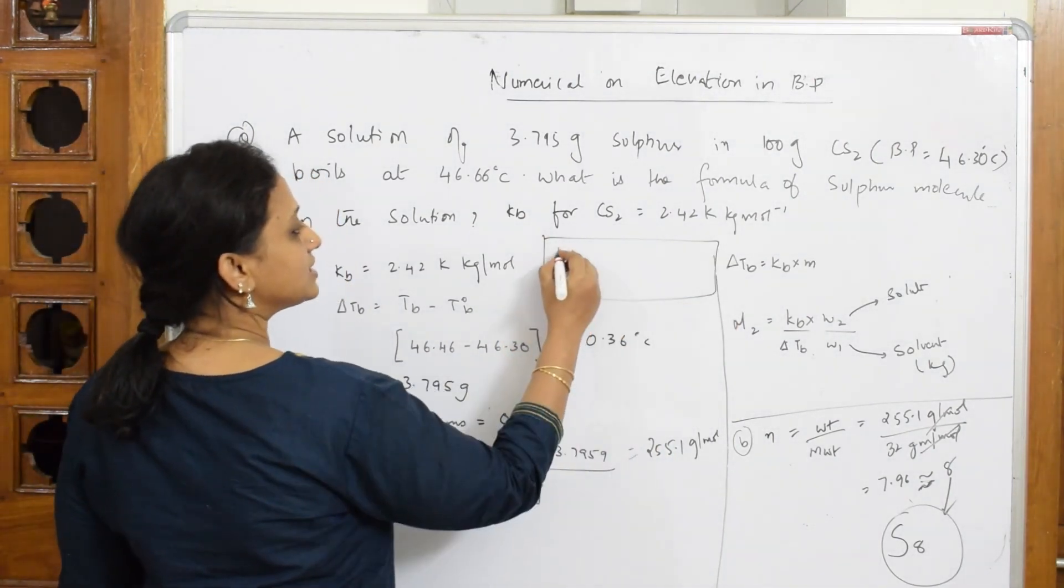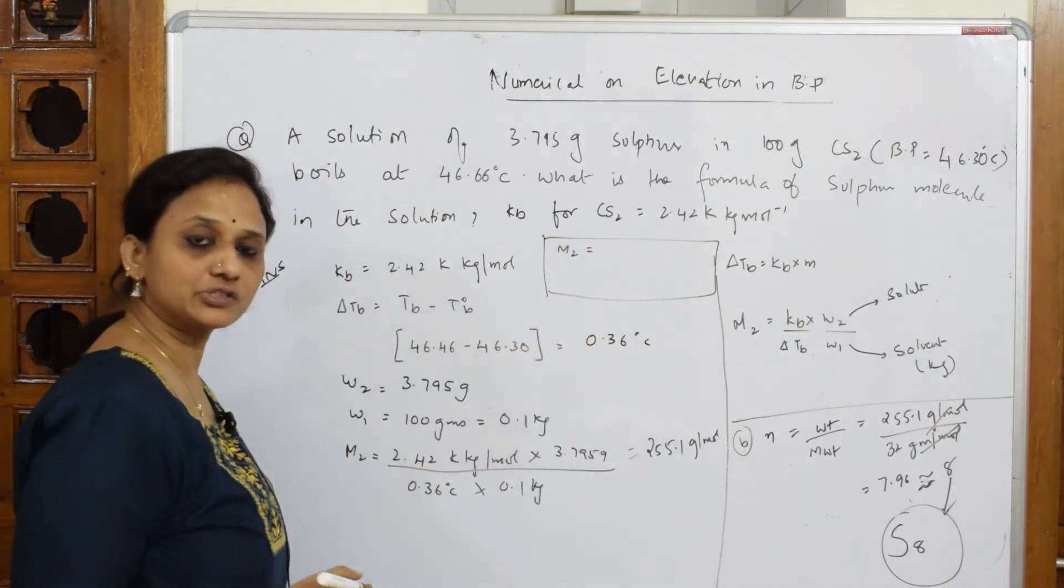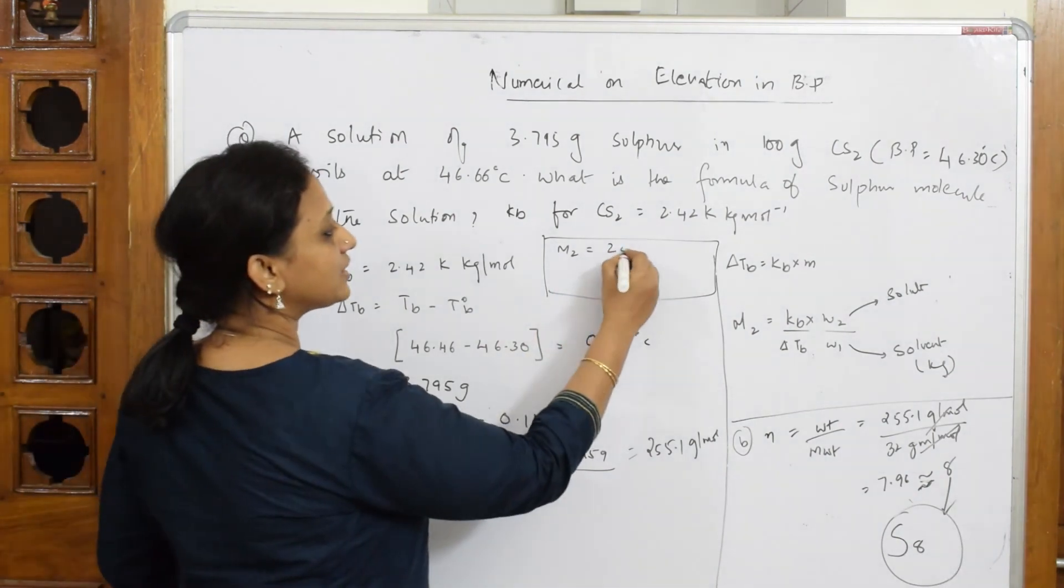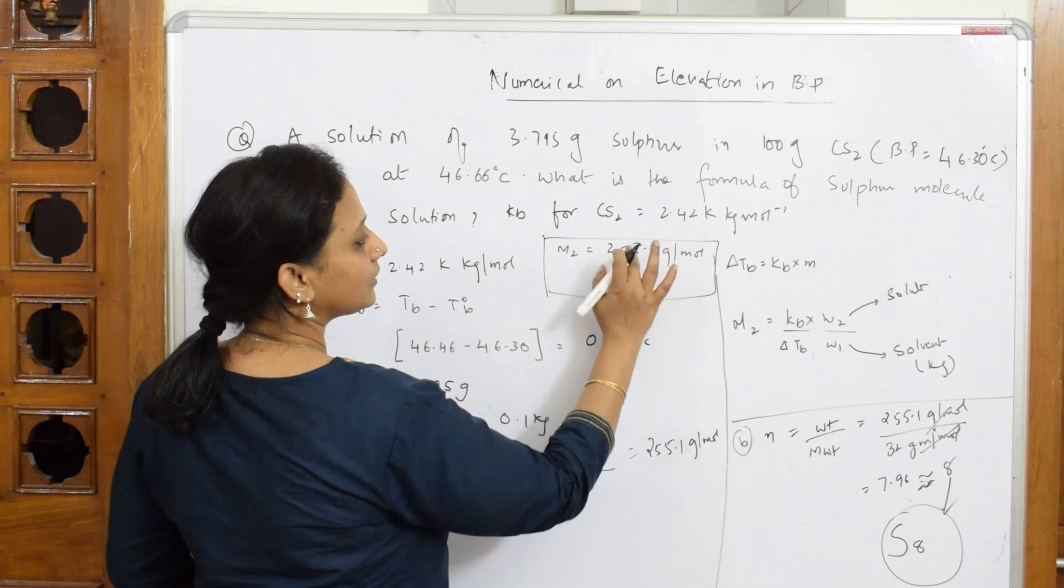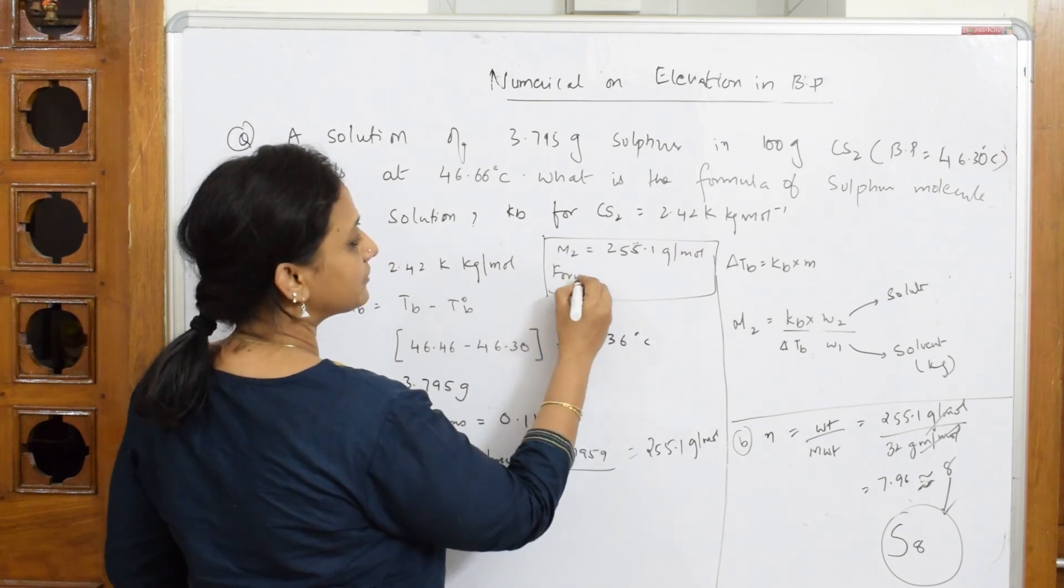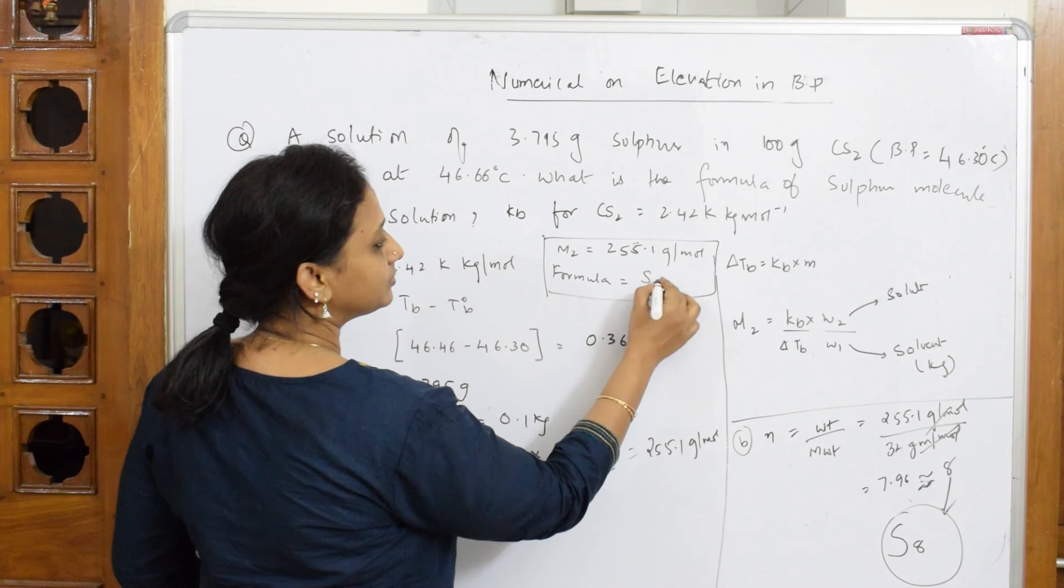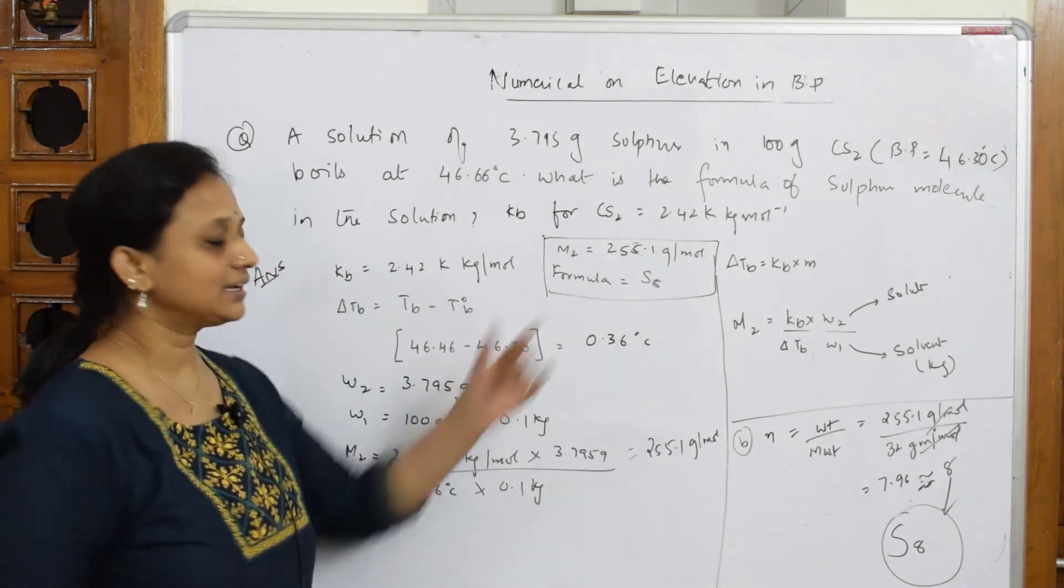So what answers did we get? We have got two answers. One is M2, that is molar mass of the solute, equal to 255.1 gram per mole, and your molecular formula which I've got is S8. Please try to mention it like this so that directly you can get marks there also.